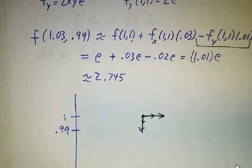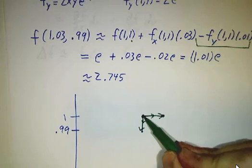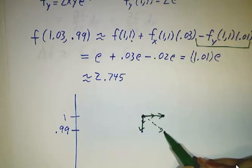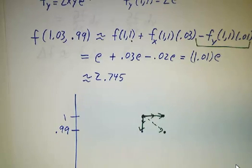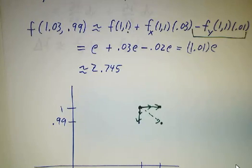Now, starting at (1,1) and going to the right 1.03 and then coming back and going down by .1 is not exactly the same thing as going to 1.03, .99, but it's very close.